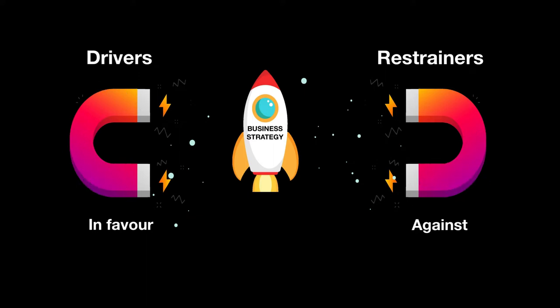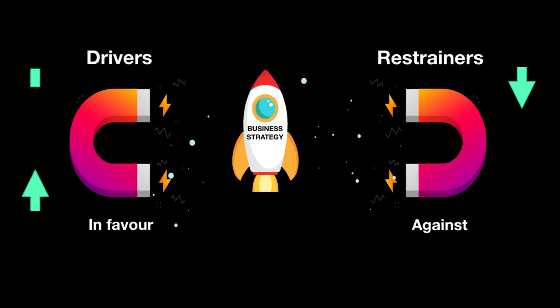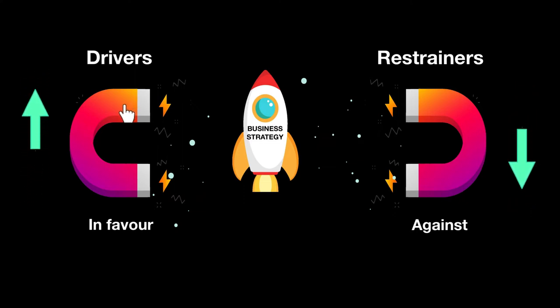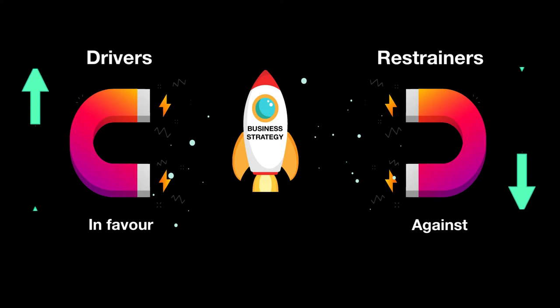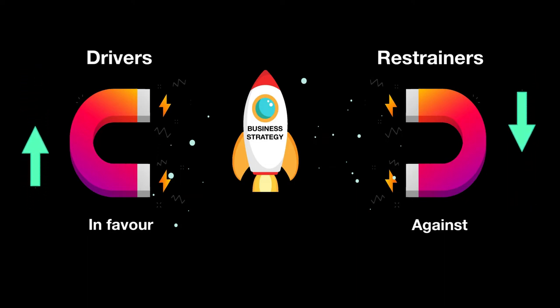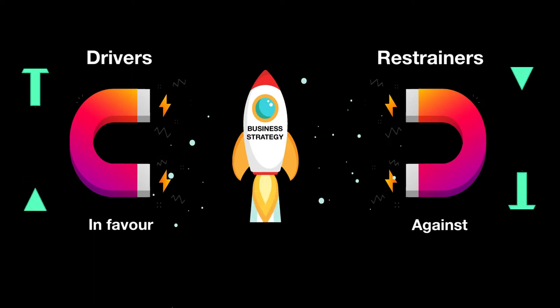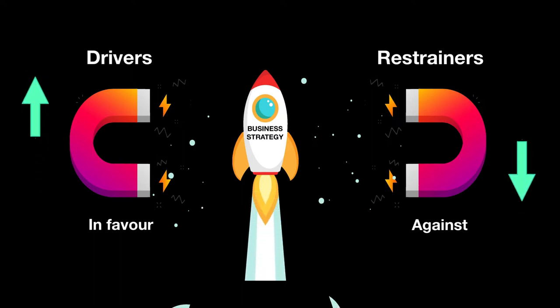The idea is always to make sure that your drivers are as high as possible or as many as possible, and the restrainers are as few as possible. When you have a situation where your drivers outweigh your restrainers, that's when the company can be sure about their business strategy and go ahead with it — and then the business can start seeing its growth strategy take off.